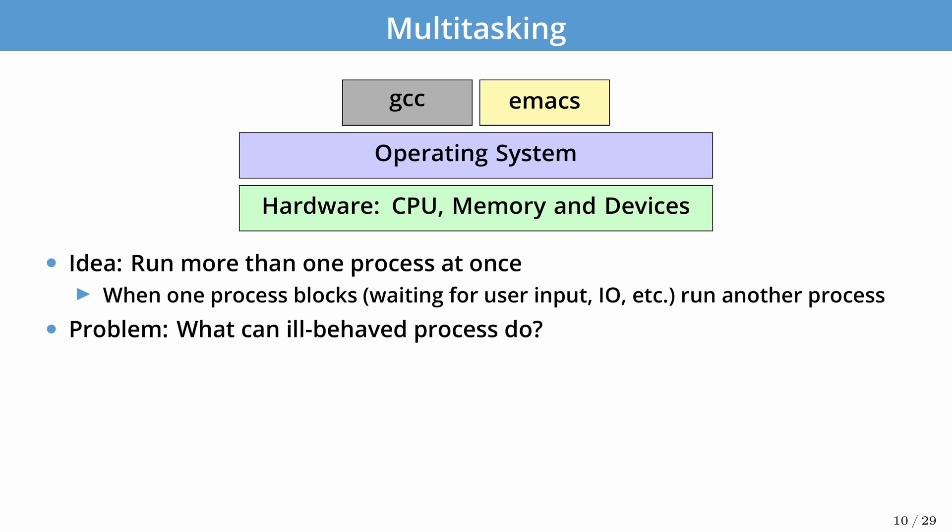What's the problem with this basic approach? The main problem is what happens when a program is ill-behaved. Imagine Emacs goes into an infinite loop and never gives up the CPU, or GCC has a bug and starts scribbling all over memory and damages your data in Emacs. Operating systems provide two mechanisms: first, preemption — we take away resources from an application and hand them to another. Second, memory protection — protecting one process's memory from another, ensuring GCC can't damage your data in Emacs.